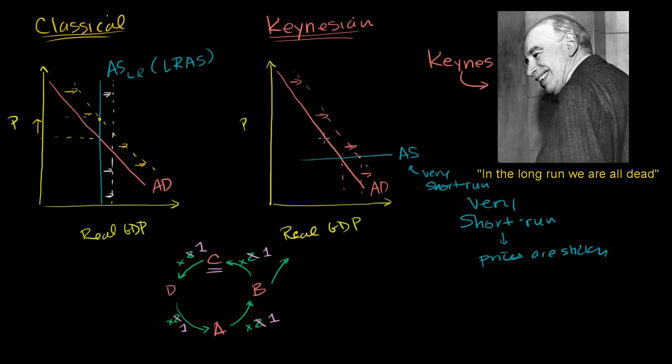But then someone else, let's say the government, tries to shift the aggregate demand curve through fiscal policy. And they say, hey, well, I'll buy one from you. I'll buy one from you, B. And so then B says, okay, now I can buy two again.